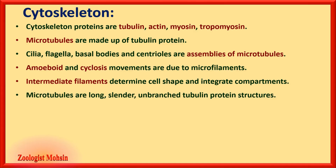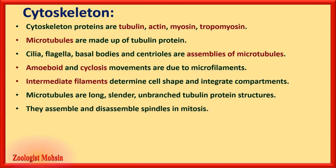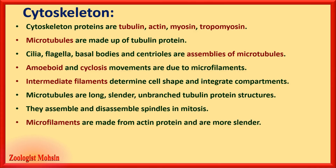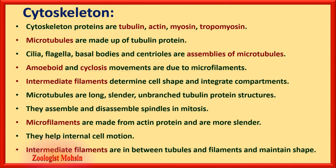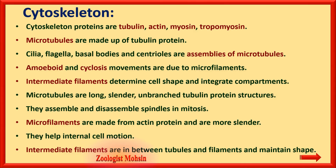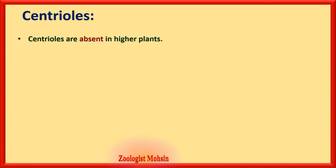Microtubules are long, slender, unbranched tubulin protein structures. They assemble and disassemble spindles in mitosis — this has been asked in past papers. Microfilaments are made from actin protein, are more slender, and help internal cell motion — the movement of organelles and fluids inside the cell. Intermediate filaments are intermediate in size between tubules and filaments, and their function is to maintain the shape of the cell.